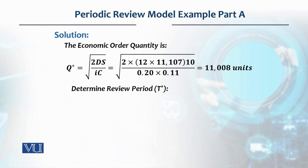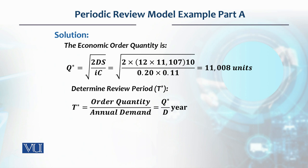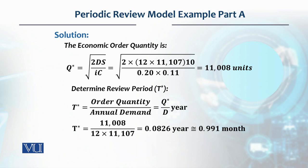The economic order quantity comes out to 11,008 units. On that basis, order quantity divided by annual demand gives 0.0826. If we multiply this by 12, we get approximately 0.991 months — which is a fraction of a month. We could convert it to one month, but we will keep it as 0.991 for more accurate calculations.